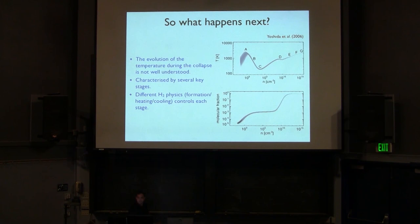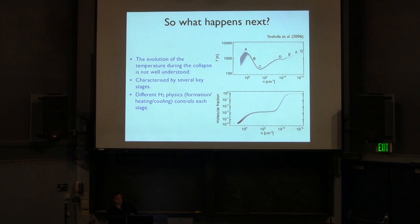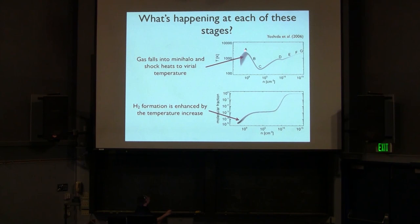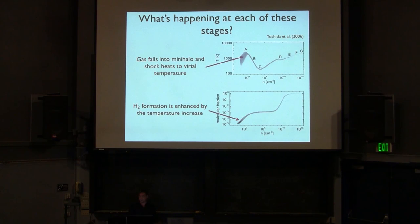This is a nice plot from Naoki Yoshida's 2006 paper. I'll walk through the stages of what happens as the gas collapses in the halo. First, the gas falls into the halo and can't cool, so it behaves adiabatically and shocks up to the virial temperature set by the gravitational energy. During this process the gas gets hot and some H2 starts to form, so the H2 fraction begins to rise. The H2 fraction in the inter-halo medium is a few times 10^-5. H2 starts to form during this shock in the mini-halo.